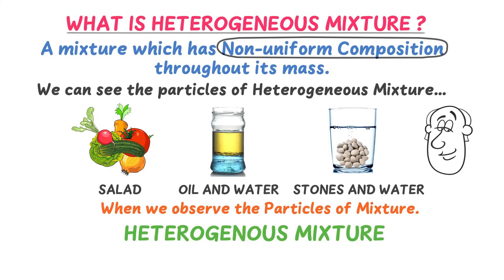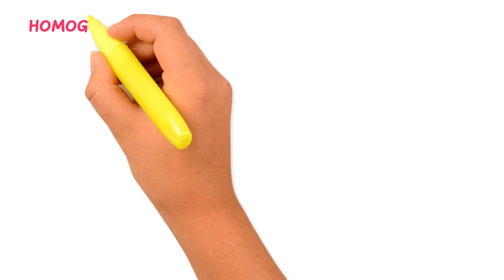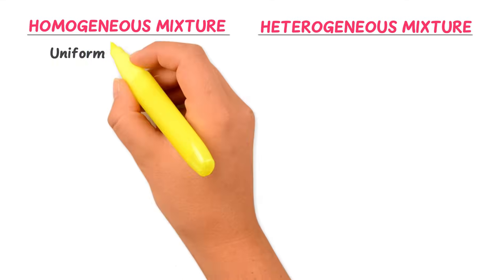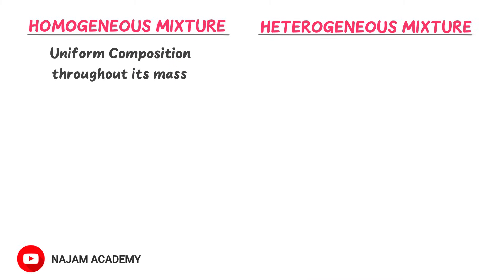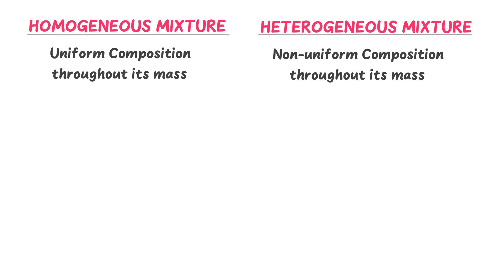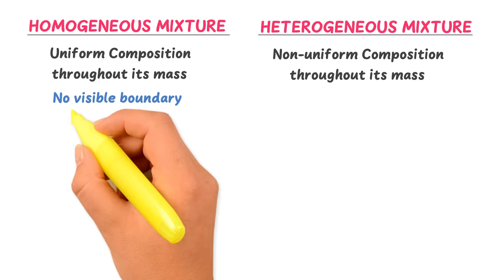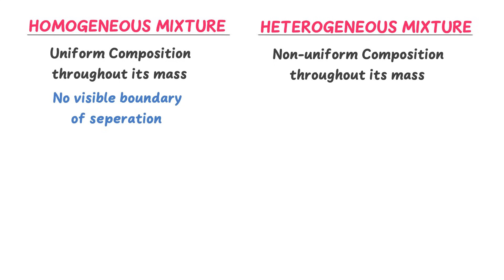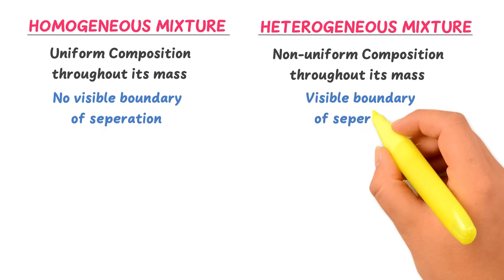Finally, let me teach you the difference between homogeneous mixture and heterogeneous mixture. Homogeneous mixture has uniform composition throughout its mass, while heterogeneous mixture has non-uniform composition throughout its mass. Secondly, in homogeneous mixture there is no visible boundary of separation, while in heterogeneous mixture there is a visible boundary of separation.